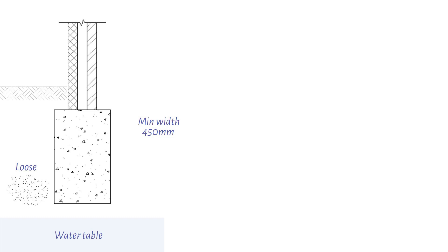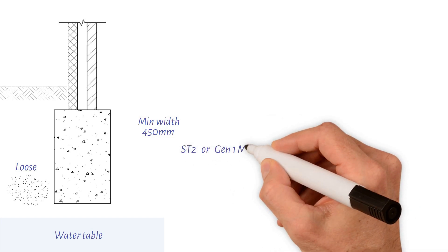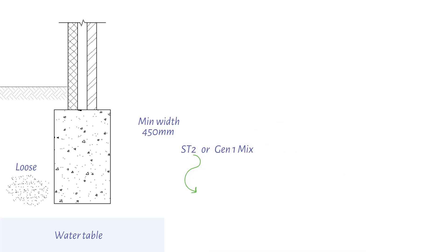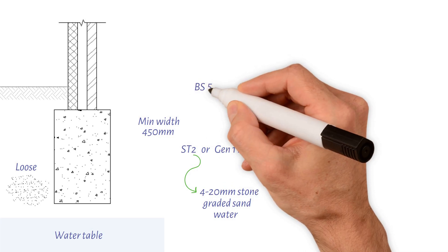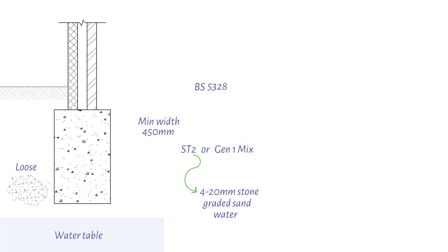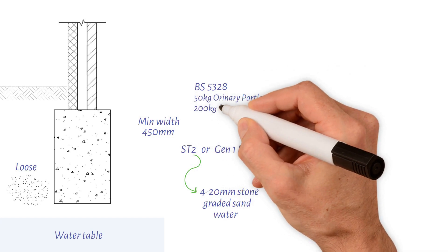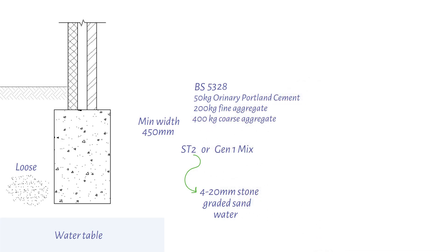Concrete mixes for strip and trench fill foundations are generally ST2 or GEN1 mix. ST2 is a standard mix consisting of 4-20mm stone, graded sand and water. BS 5328, Section 4, provides the mix proportions: 50kg Ordinary Portland Cement, 200kg Fine Aggregate, and 400kg Coarse Aggregate. ST2 has a compressive strength of 10N per square millimeter.